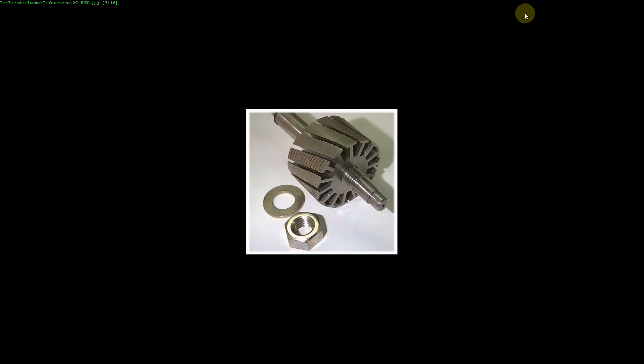Hello everybody. I recently found this picture of the rotor part of a DC motor and I thought this is an ideal model to show the interaction between an empty object and a normal modifier, because this concept is quite different to what you are used to in Modo.